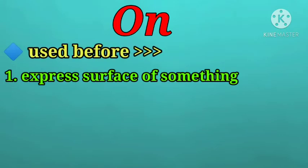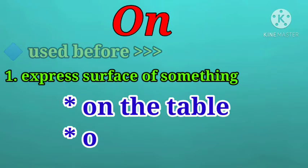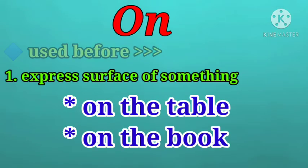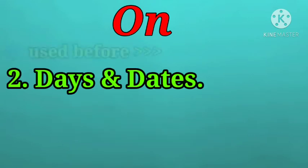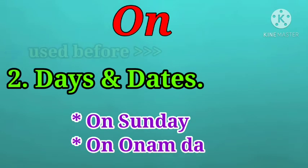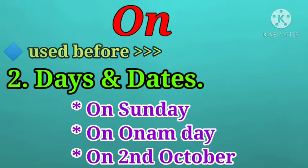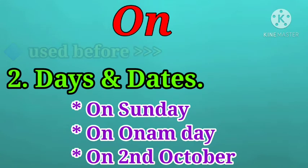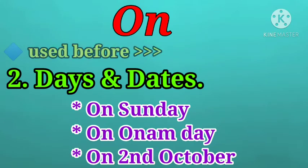The preposition 'on' is used to express the surface of something — for example, on the table, on the book. 'On' is also used before days and dates — for example, on Sunday, on Monday, on Onam Day, on 2nd October.